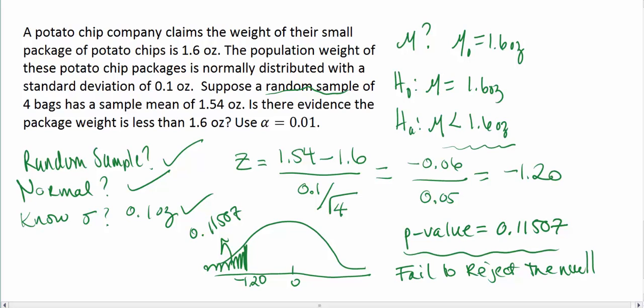That's too big of a probability or chance for us to say we should reject the null. It's also because our significance level is equal to 0.01. Our p-value is greater than alpha so we're going to fail to reject.